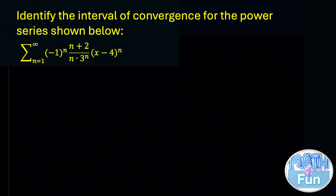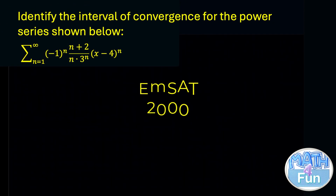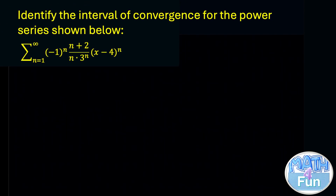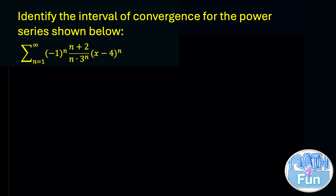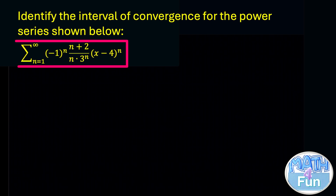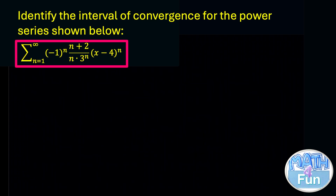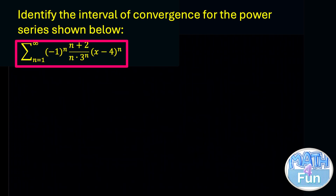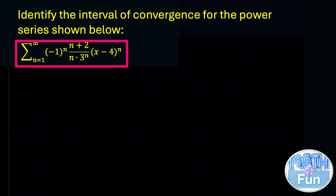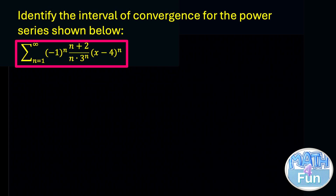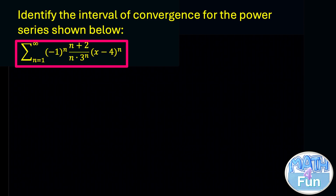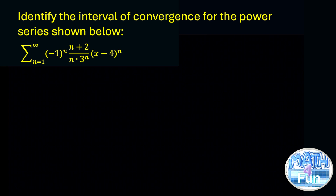Let me show you this question. They said: identify the interval of convergence for the power series shown below. It's sigma from n equal 1 to infinity of minus 1 to the power n, multiplied by n plus 2, over n times 3 to the power n, into x minus 4 to the power n.